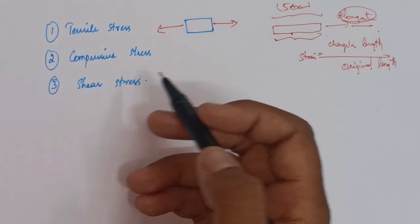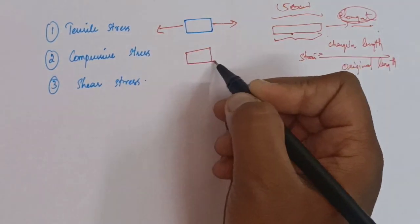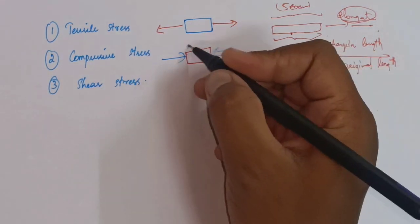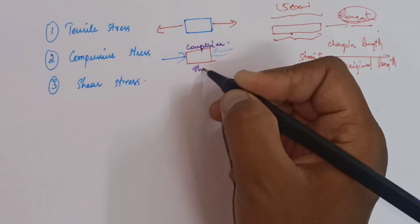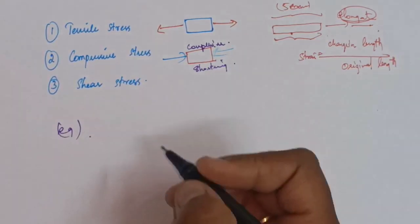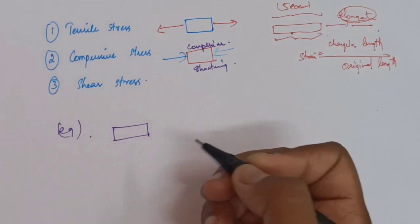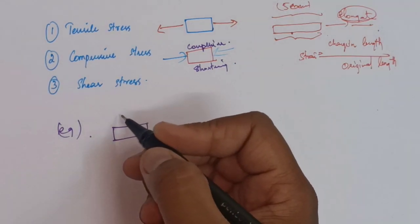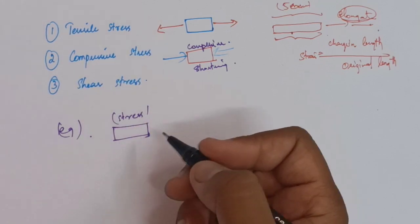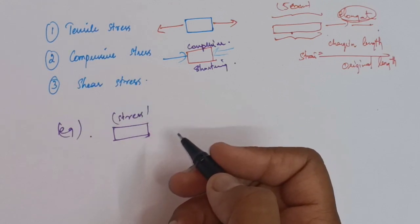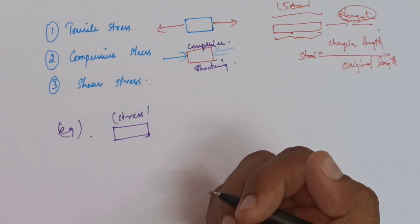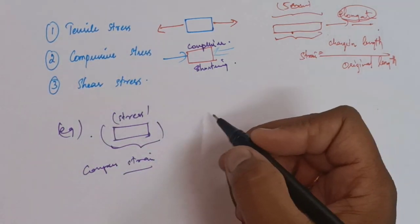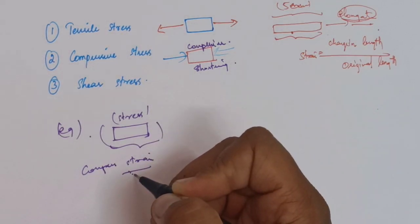The next one is compressive stress. As the name indicates, you are compressing a body — two sets of forces acting towards each other — resulting in the compression or shortening of the body. For example, if you take a cotton pellet and compress it with your two hands towards each other, to a certain extent the stress will resist your compression. That is compressive stress. Once it exceeds the internal strength, it undergoes deformation — that is compressive strain. Compressive stress results in the shortening of the body.